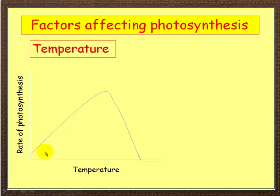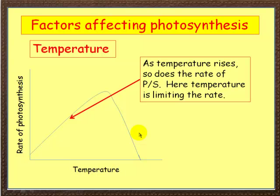Now here's a classic graph. On the x-axis we've got temperature, and on the y-axis we've got rate of photosynthesis. This could be measured, for example, by the number of oxygen bubbles released by the plant. So we can measure this quite simply, also measure temperature, and we can do this experiment at a range of temperatures. This is the graph we expect.